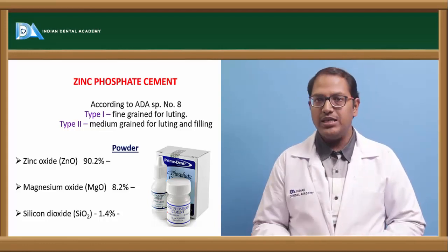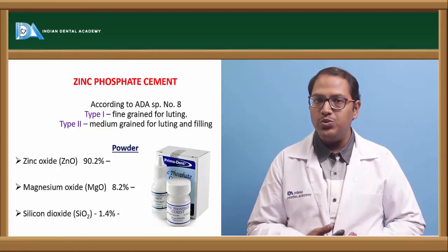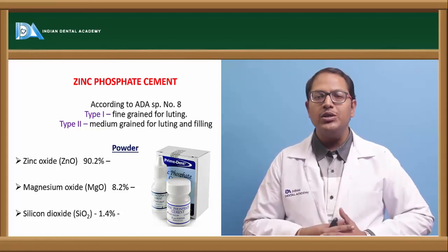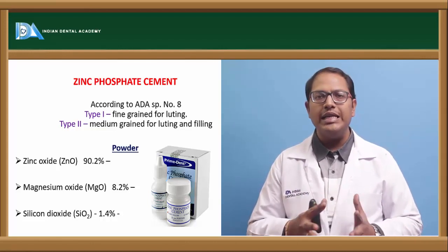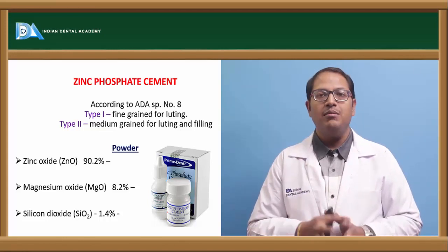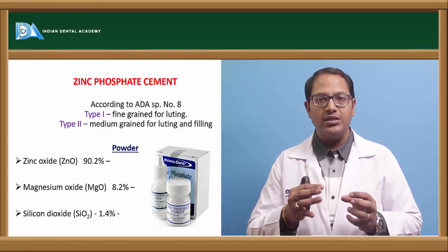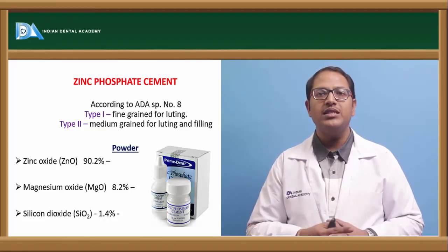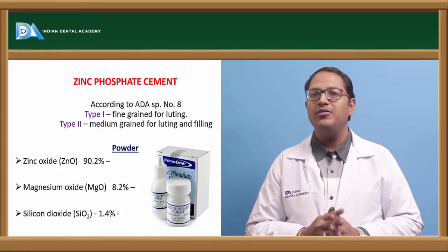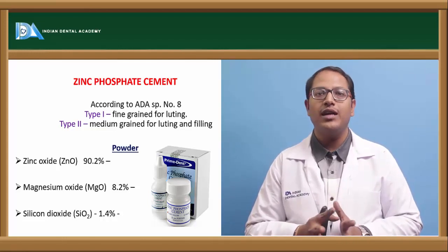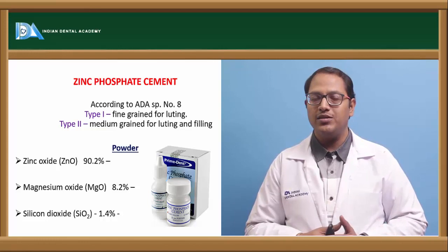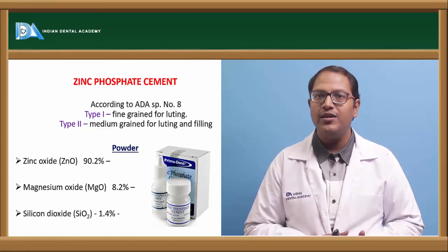To know which cement to use, we need to understand their properties, how they are useful, and their disadvantages. McLean gave us many ideal characteristics, but as of 2017, we still do not have a single cement which fulfills all the characteristics — and that is very ironical in the commercial market for luting agents.